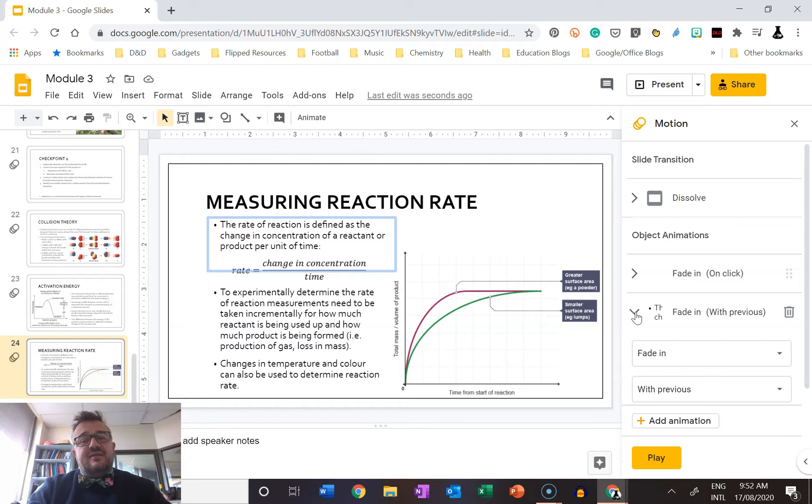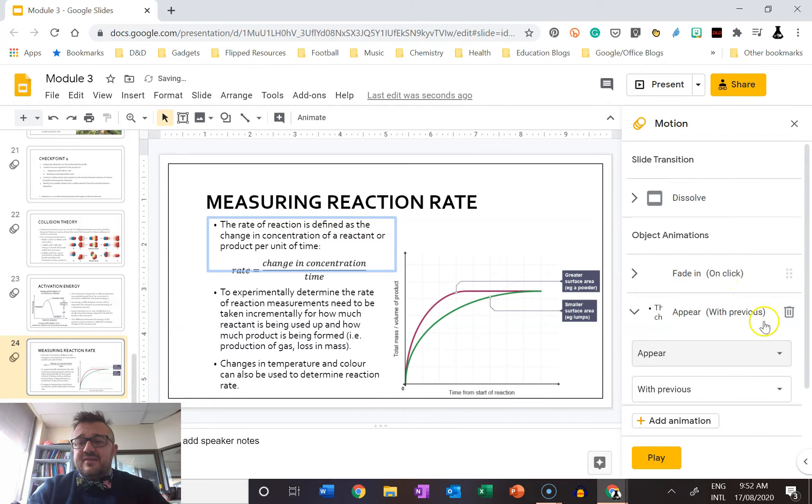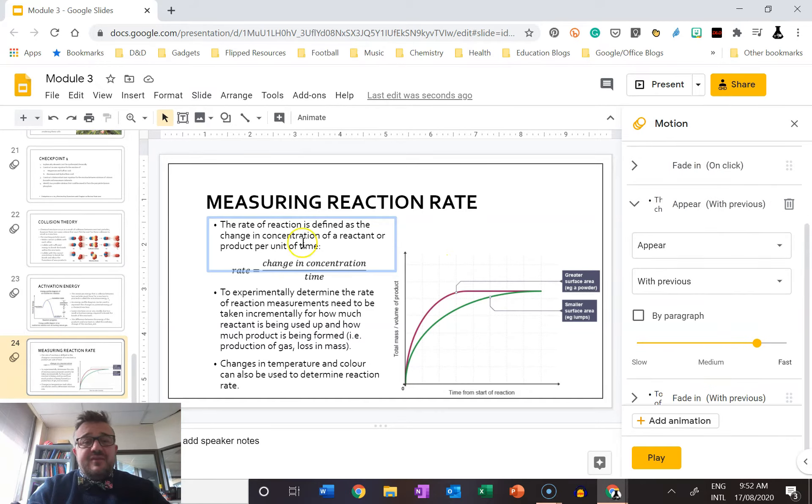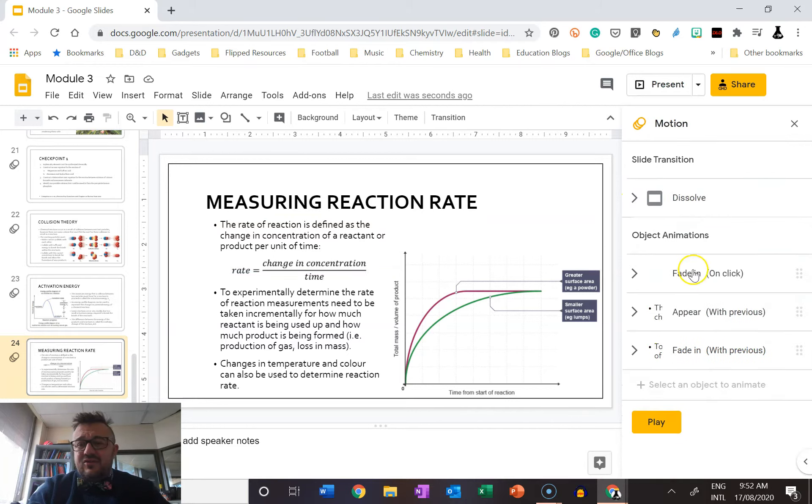So here is the thing that I want. We can fade in. I like appear—nice and simple. With previous, by paragraph—we see there's only one paragraph on this one, so we don't need to do that. That's fine, that's just all the speed options. Now I'll close that down, so that's good, and they fade in on a click.